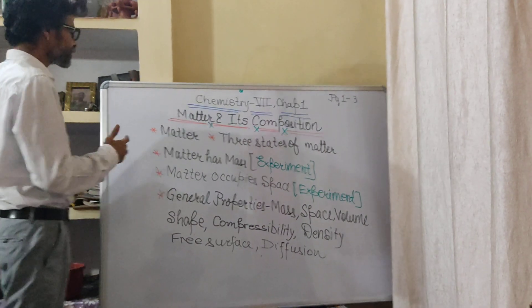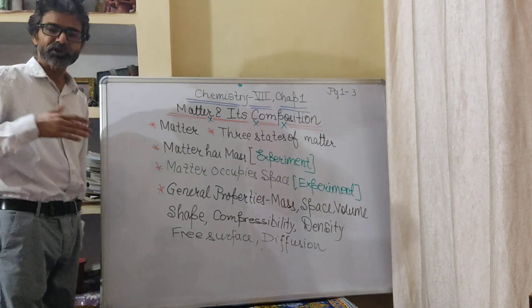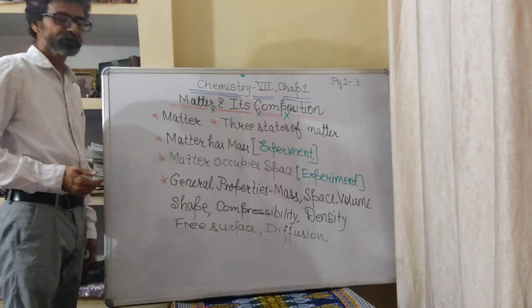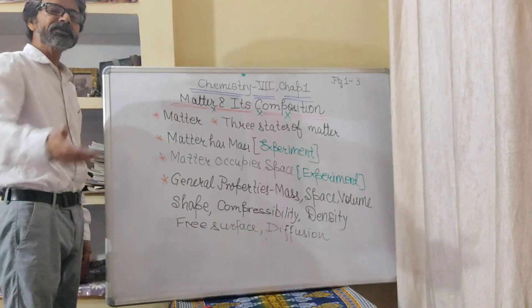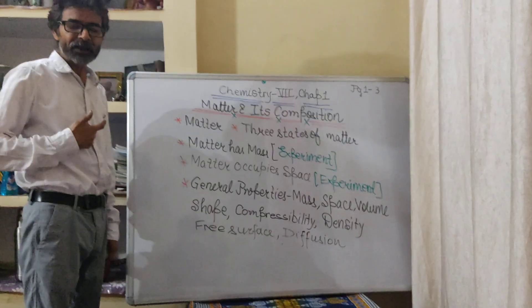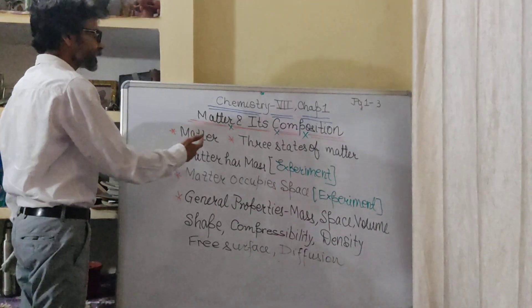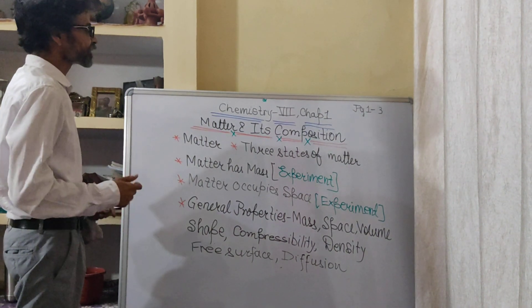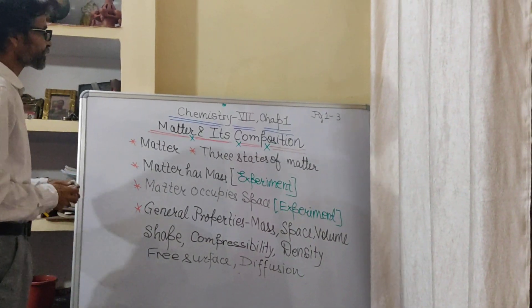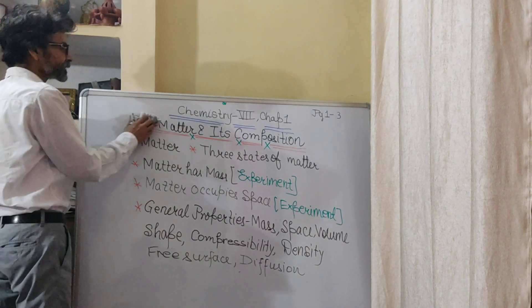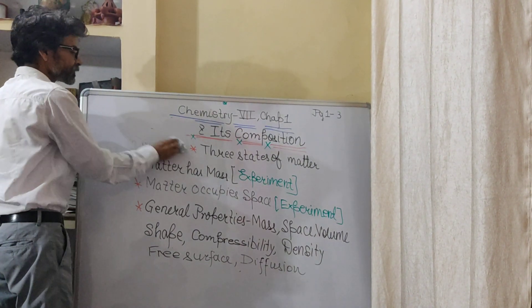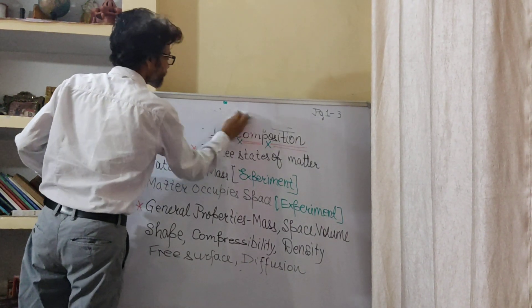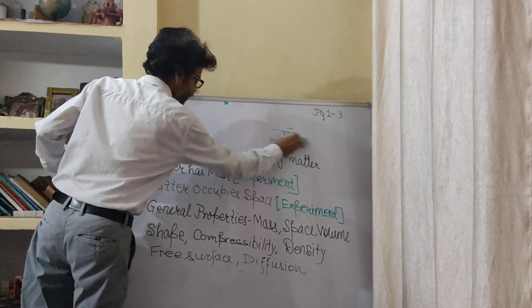However, in chemistry we study about the matter which is non-living, man-made or naturally occurring. There are three states of matter. All the substances around us — you are a matter, I am a matter, the water is a matter — they exist in different states. There are three states of matter: solid, liquid and gas. Today we are going to talk about the matter, its composition and the three states of matter in chemistry of class 7th, chapter 1, pages 1, 2, 3.